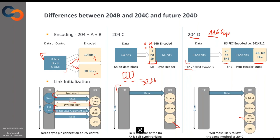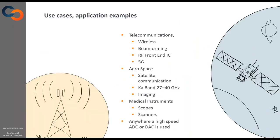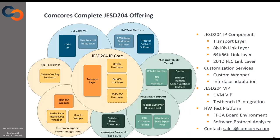Question: Can the link layer be used without the transport layer? Answer: Yes. Our IP contains separate components for the transport layer and link layers. You can use a single link layer as the whole IP — the interface will differ slightly. For example, in the 64/66b link layer, you have 64 bits per lane as input to the link layer for every lane, so you have to handle the mapping of converter samples to specific lanes yourself. In some configurations, this is straightforward, and you may not need the transport layer or may want to implement it yourself. We are totally flexible with that.